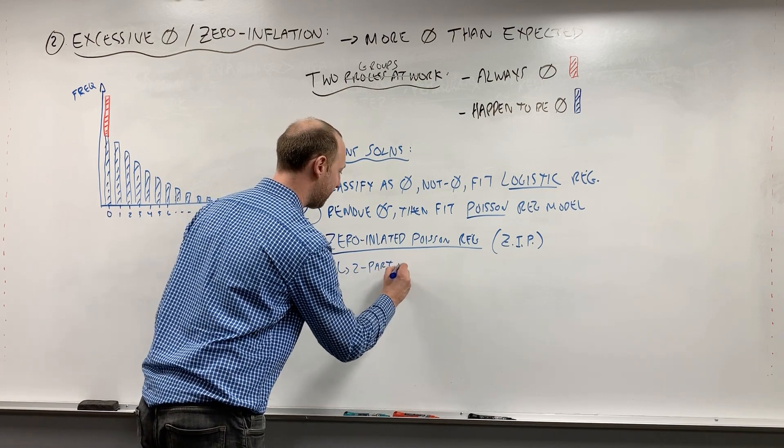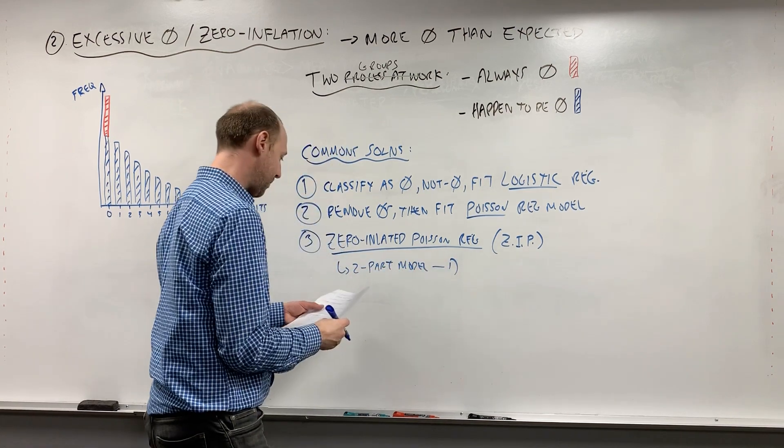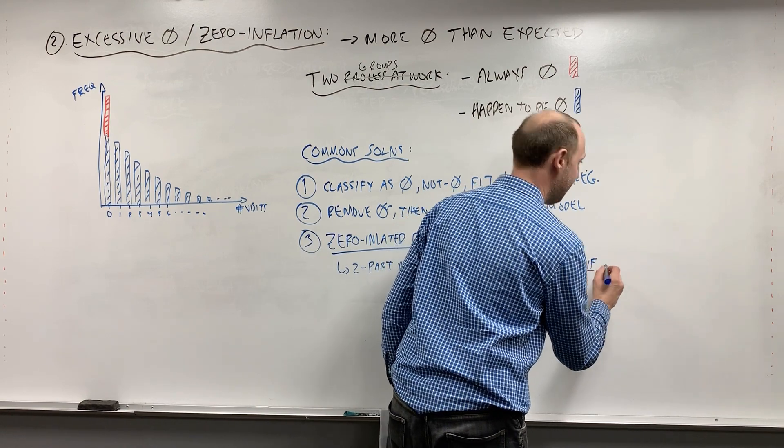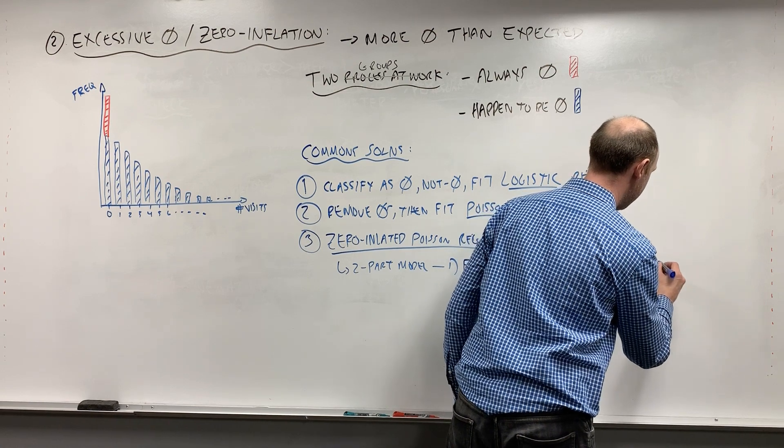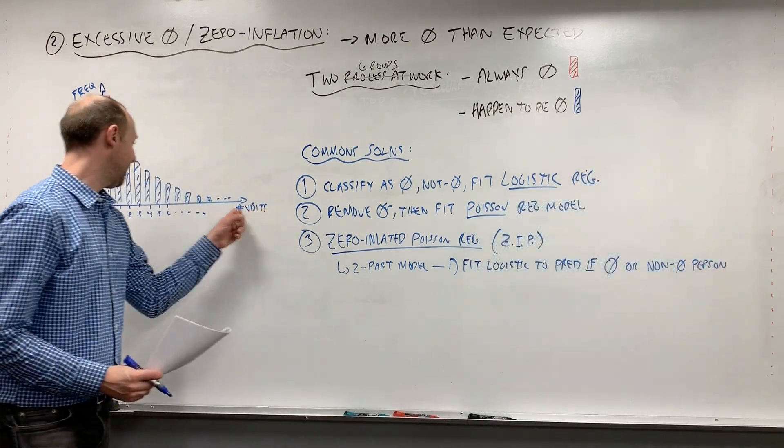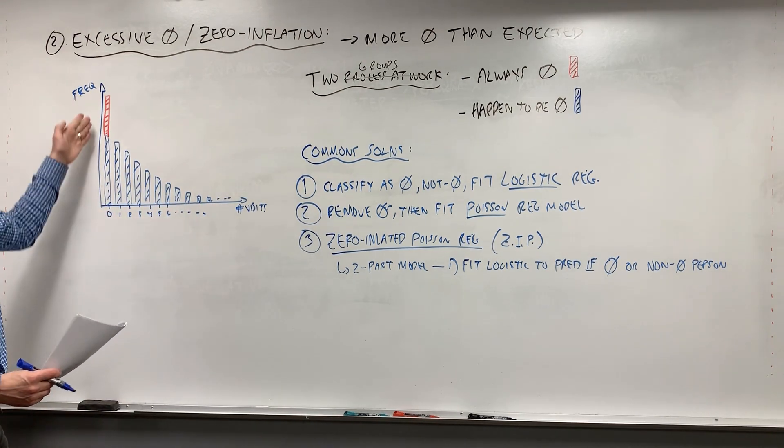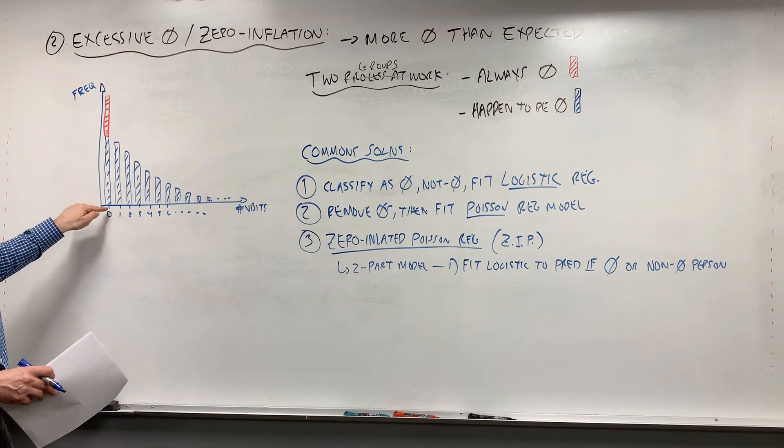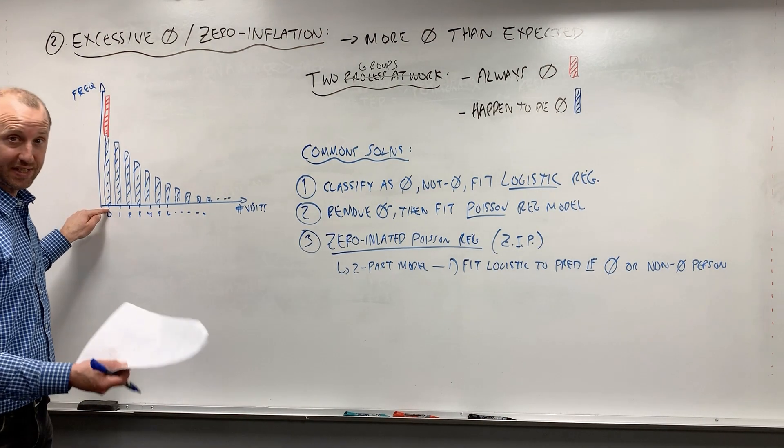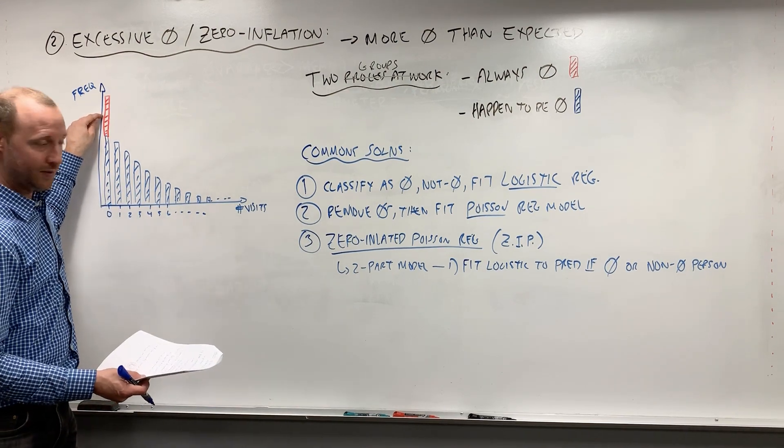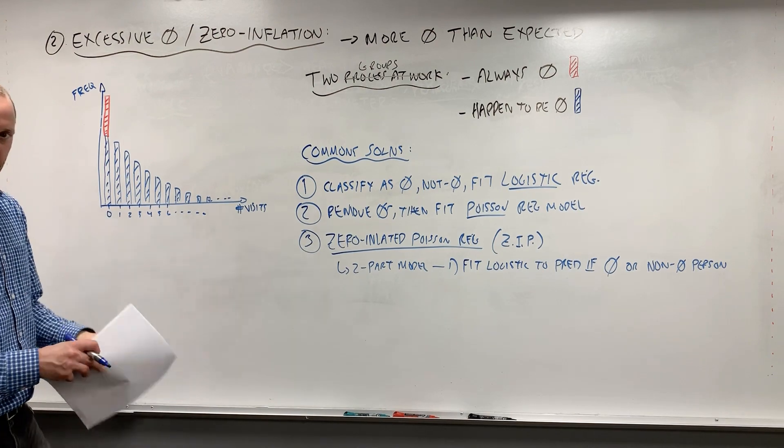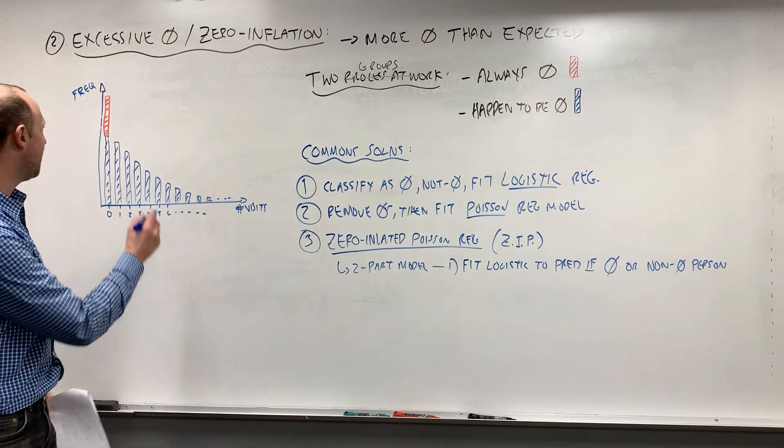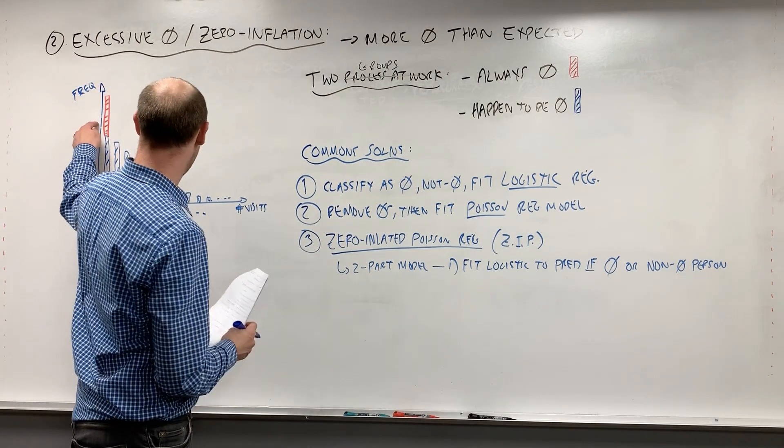What this is, is it's a two-part model, two-step model. Step number one is where you fit a logistic to try and predict if the person is a zero or a non-zero person. Again, that doesn't mean if they went or not. What we mean is taking all of these zeros and through logistic regression try to build a predictive model that tries to separate who are the people who happened to be a zero but would go if they needed to, they just didn't need to this year, versus who are the people that never go. So it's trying to separate the blue from the red. Build a logistic model that tries to predict who are the always zeros and who are the happened to be zeros. So what it's trying to do is get those red, predict who those red individuals are.